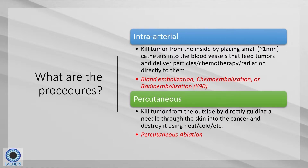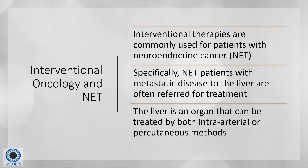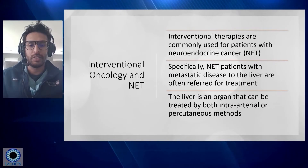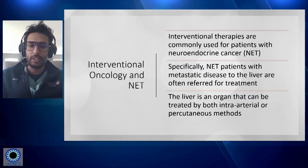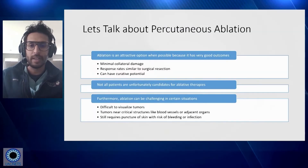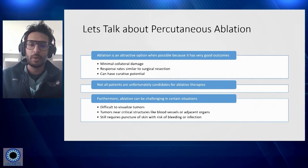With percutaneous procedures, instead of going through the arteries, we go directly to the tumors — taking a needle from outside through the skin directly into the tumor. Then we either destroy that tissue by freezing it, heating it up, or using other modalities. That procedure is known as percutaneous ablation. We often treat patients with neuroendocrine cancer because metastatic disease to the liver is very common and is often one of the first sites of spread that we see.